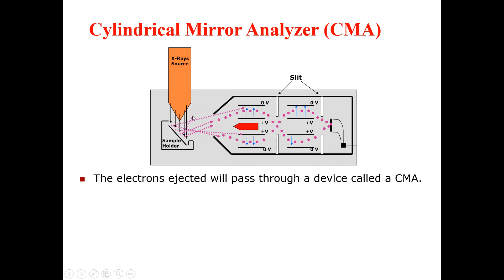Let's proceed towards today's lecture about CMA, that is the cylindrical mirror analyzer. A typical sketch of the experimental setup — the working functions of the cylindrical mirror analyzer — you can see here in this picture. We have the sample holder which contains the sample, and from here we have the x-ray source which emits x-rays that fall on the sample. After the electrons are ejected from the sample, they proceed towards a device called the CMA, or cylindrical mirror analyzer.